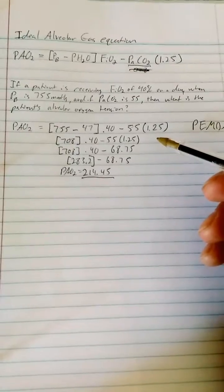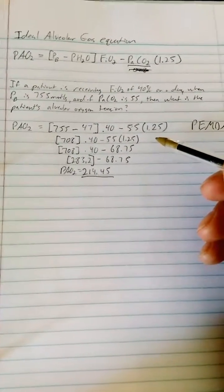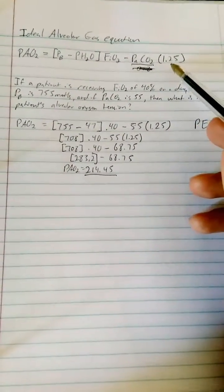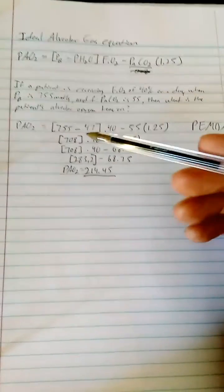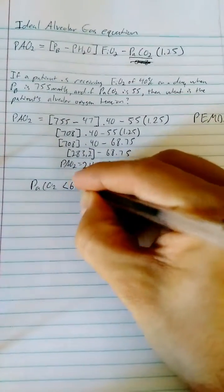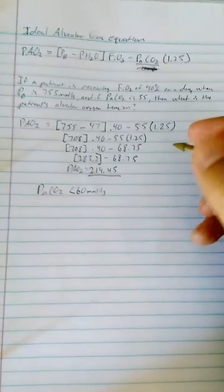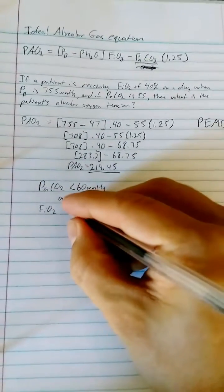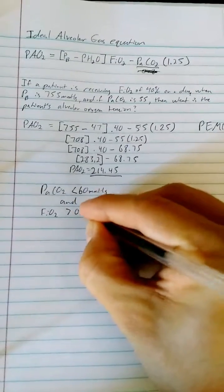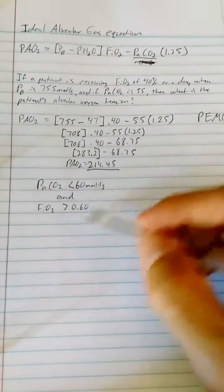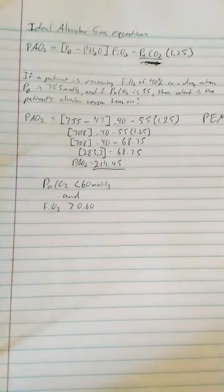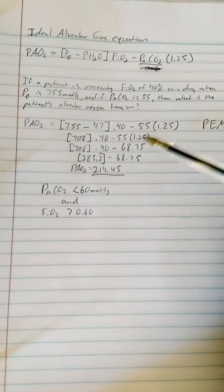Now I mentioned this in that first video I did, that there are times when a simplified equation can be used. Basically, you can drop the coefficient, regardless of how you're doing it, the 0.8 or the 1.25. And that is when the PaCO2 is less than 60 millimeters of mercury and the FiO2 is greater than 60 percent. If these parameters are met, you do not need to use this respiratory quotient.